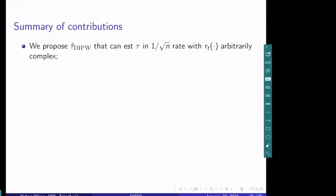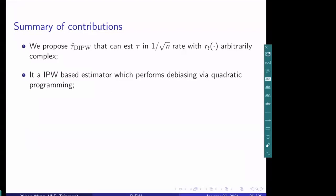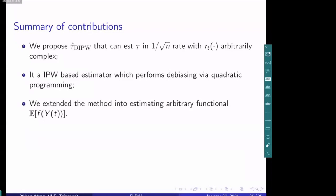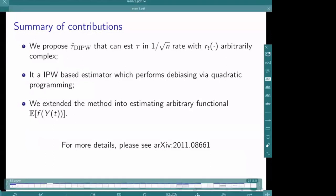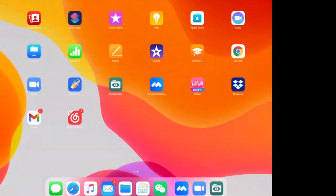In summary, we have proposed the DIPW estimator that can estimate the average treatment effect tau in the 1/√N rate while allowing the outcome regression R_t to be arbitrarily complex. Thank you very much for your very interesting talk. I would like to give the word to the audience if they have any questions — please unmute yourself and go ahead and ask directly.